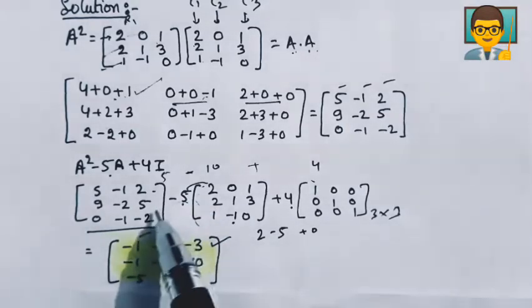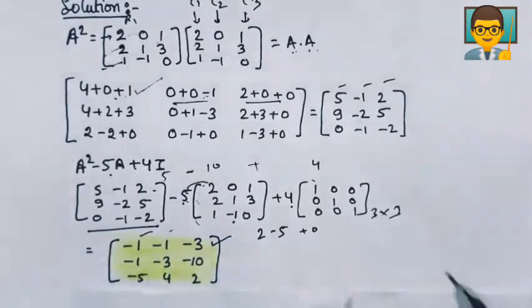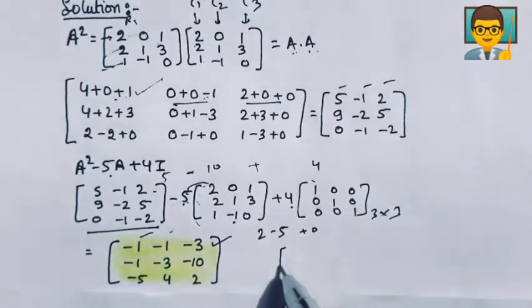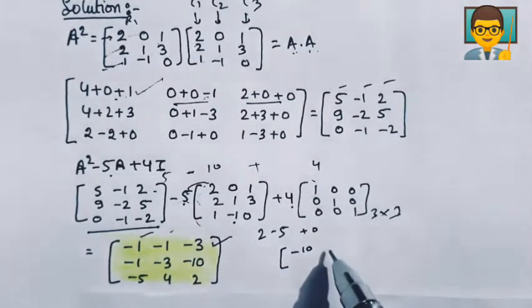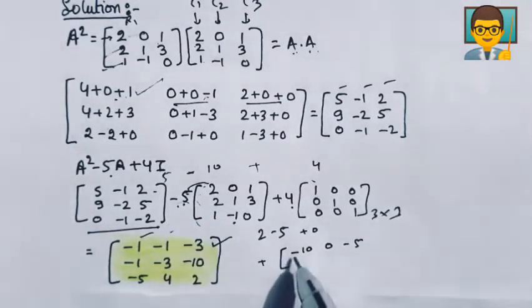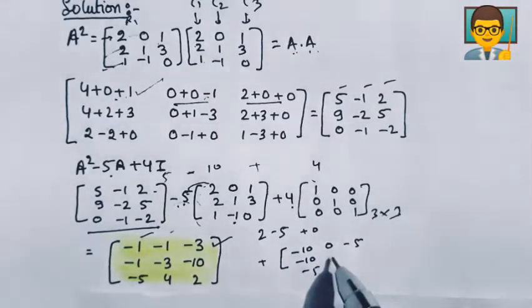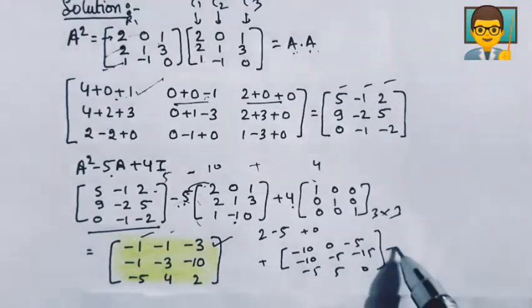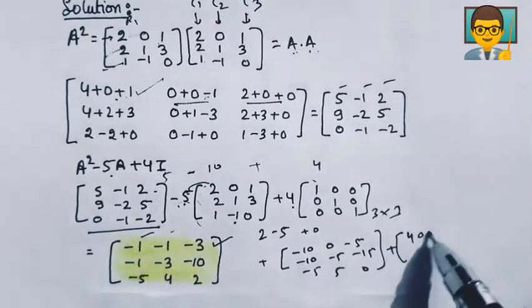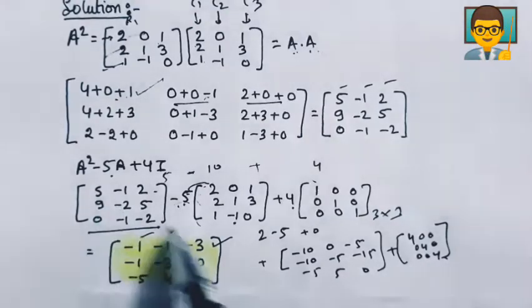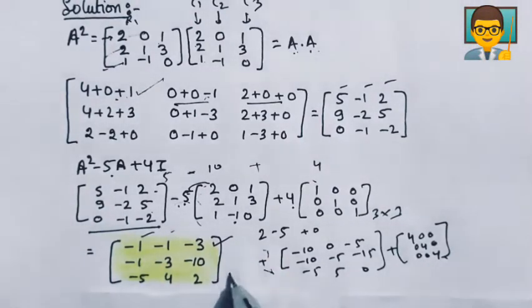Similarly, when you solve this all, when you solve this, then you write down this matrix which will be -10, 0, -5. If you write down the plus, then -5, -5, -5, -15, 5, 0. And if you solve this, then you solve this matrix.